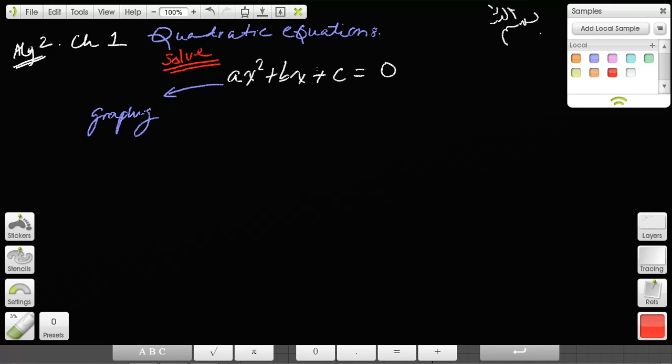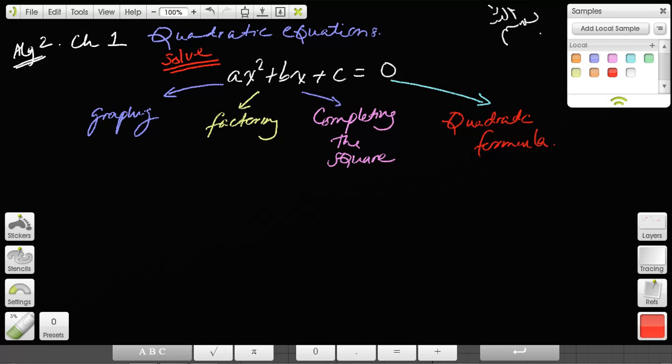To solve a quadratic equation like this: the first method is graphing, which we haven't talked about yet; the second is by factoring; the third is by completing the square; and the fourth way is the quadratic formula. Today we'll talk about this fourth way, and then we only have that first method left.